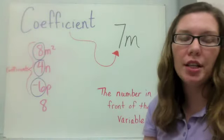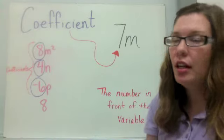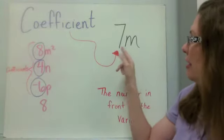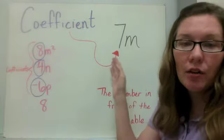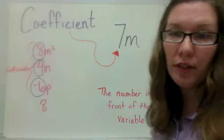Another word we need to know when we're talking about expressions is the word coefficient, and in this expression, 7m, 7 is the coefficient. It is simply the number in front of the variable. That's a coefficient.